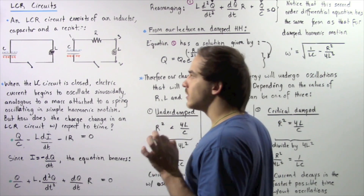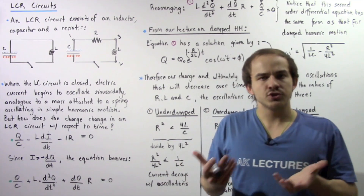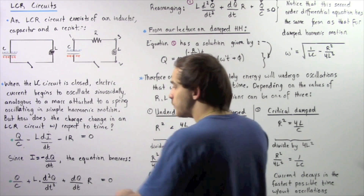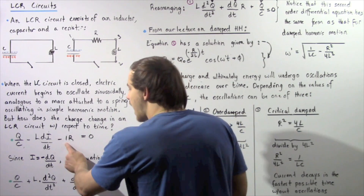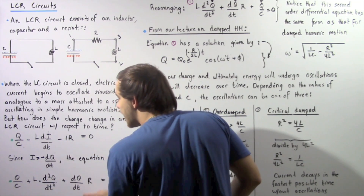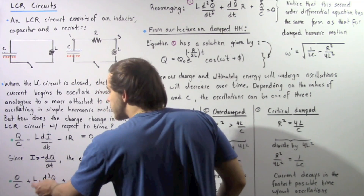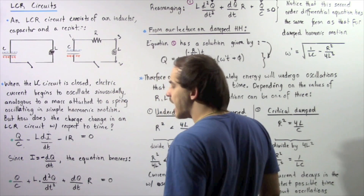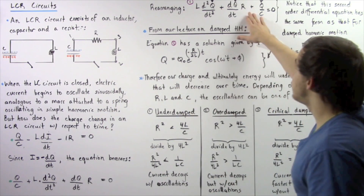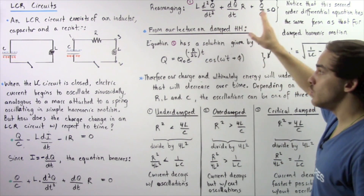Recall the definition of instantaneous electric current: I = −dQ/dt. Substituting this into our equation, the negatives become positives and we replace I with dQ/dt. This gives us Q/C + L(d²Q/dt²) + R(dQ/dt) = 0. Rearranging, we obtain equation one — a second-order differential equation describing the rate of change of electric charge in the capacitor after the switch is closed.